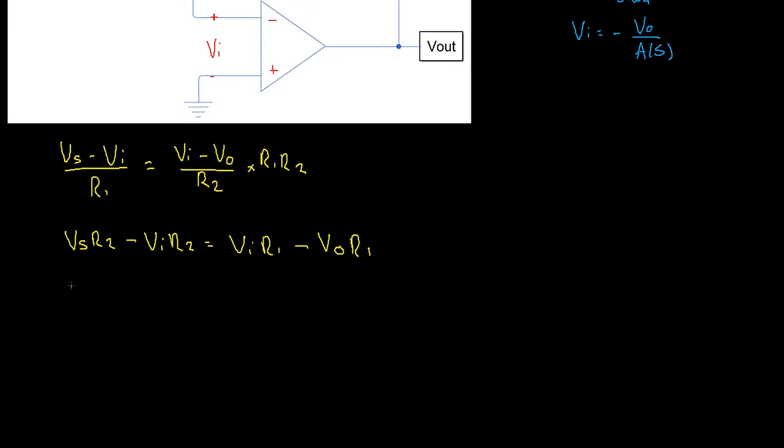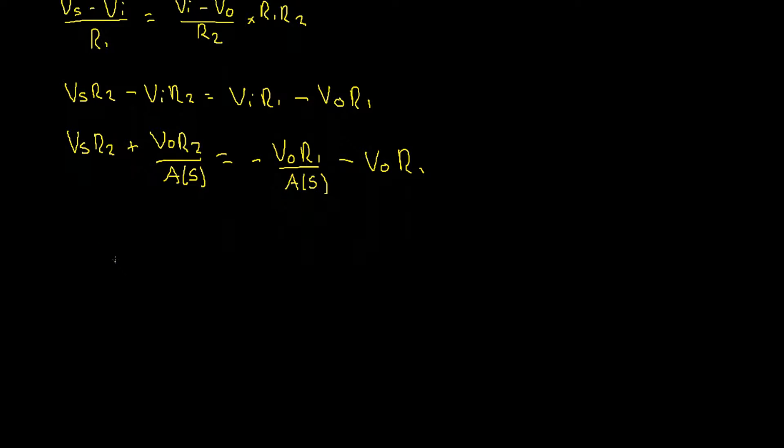Excellent. Now we can use our equation vi equals negative vo over A(s) to get this equation in terms of vo, vs and A(s). The vs r2 remains unchanged. Then as we substitute in negative vo over A(s) for vi, the minus becomes positive vo r2 divided by A(s), which equals the vi becomes negative vo r1 divided by A(s) subtract the vo r1 remains unchanged.